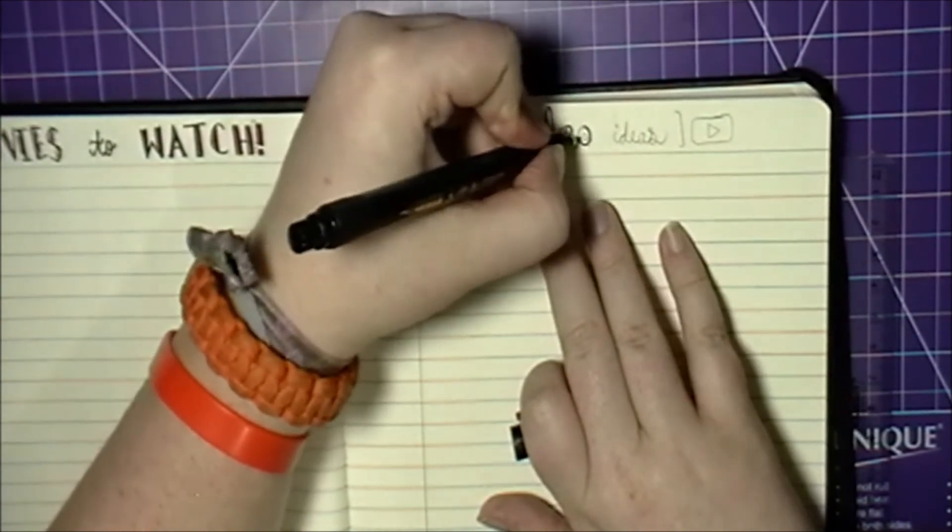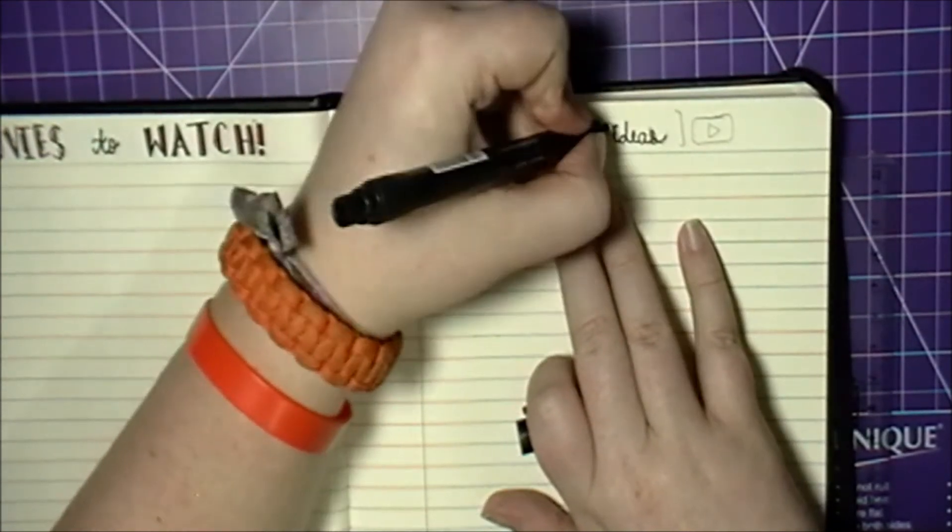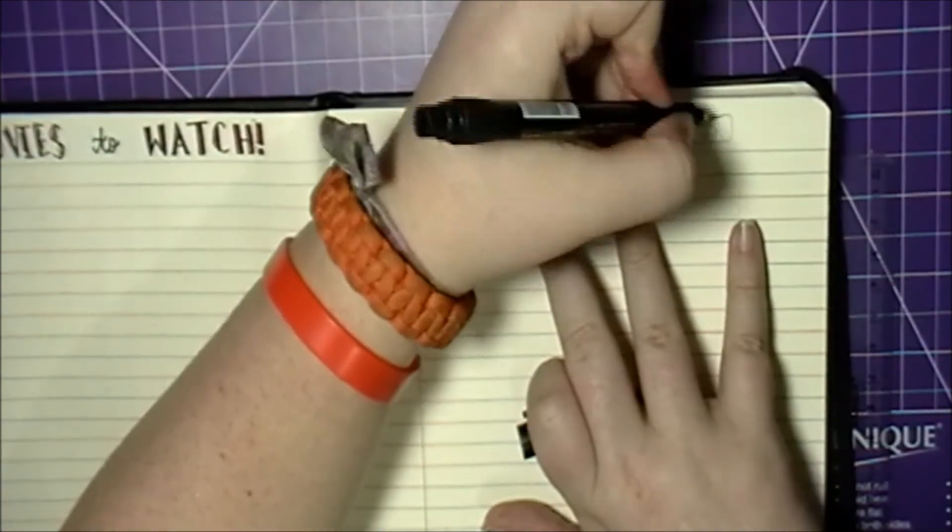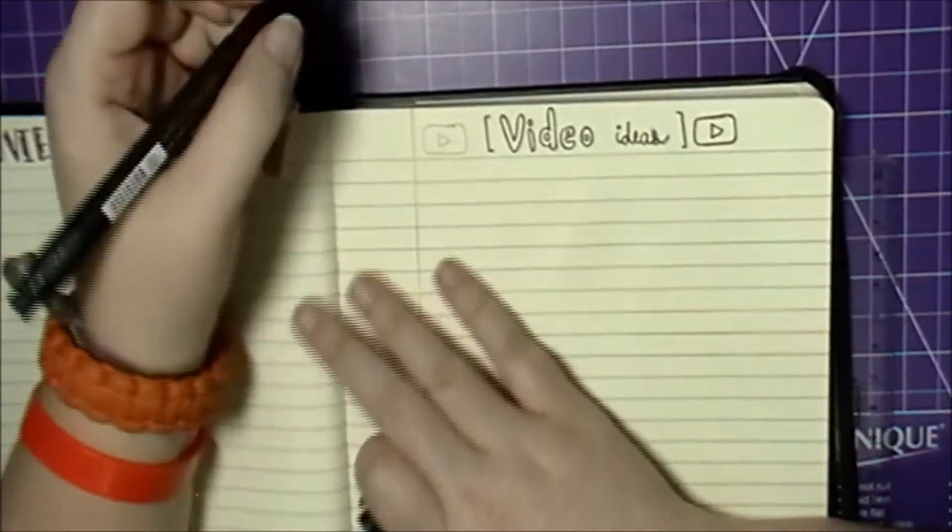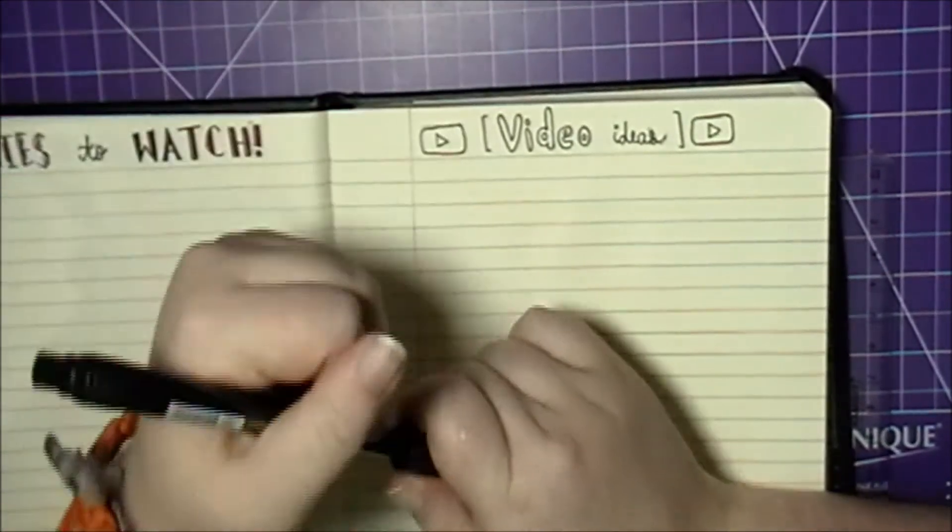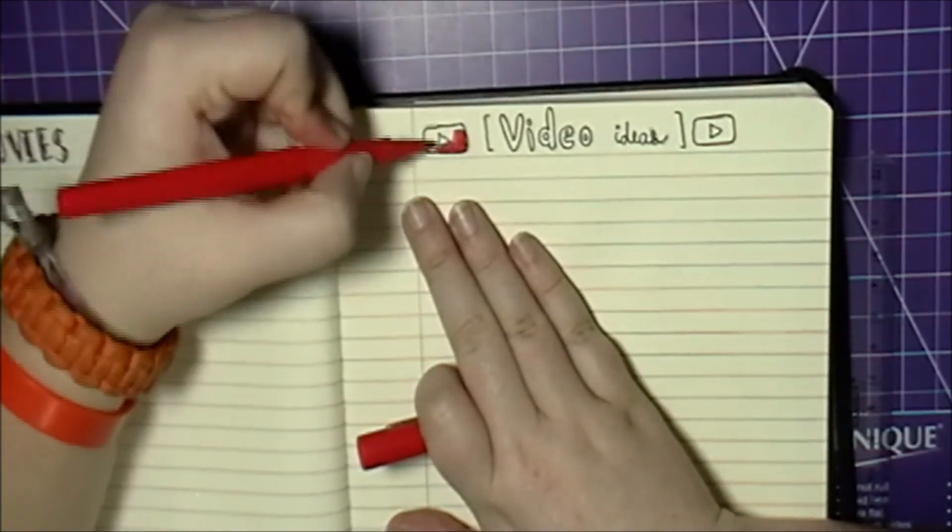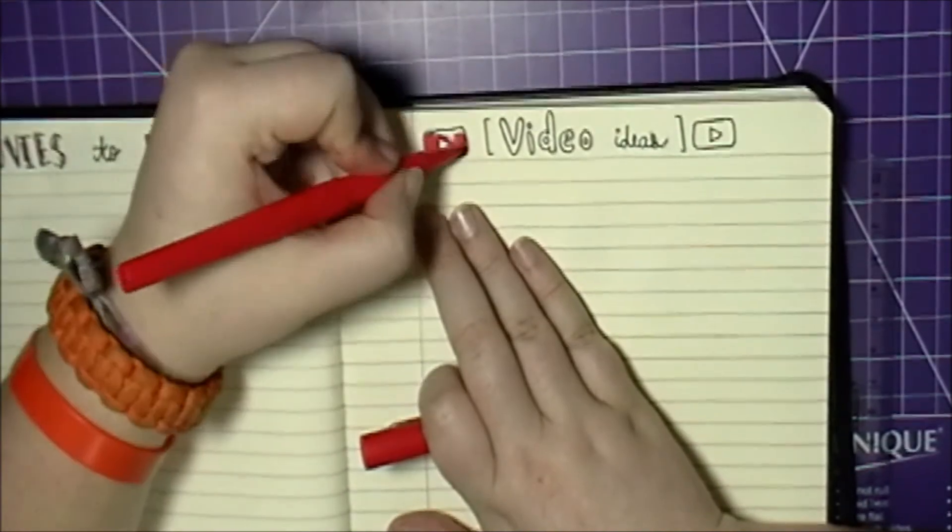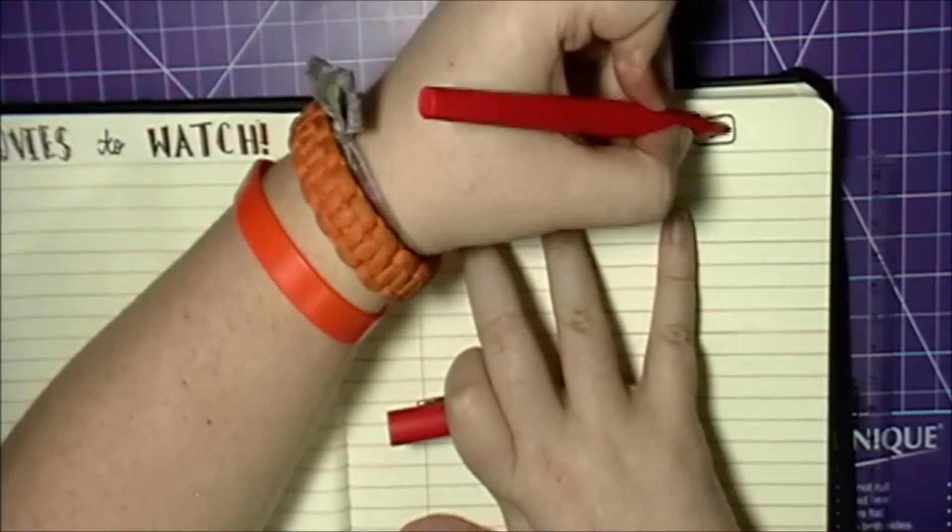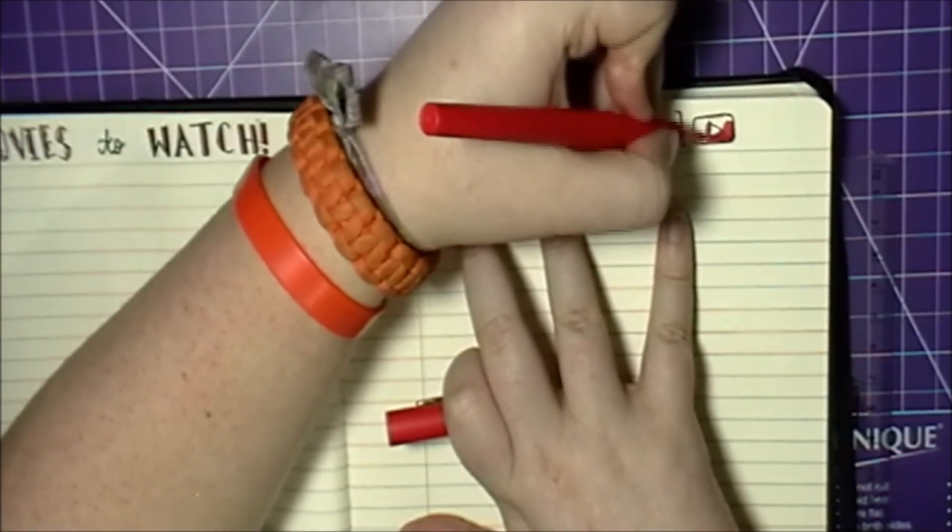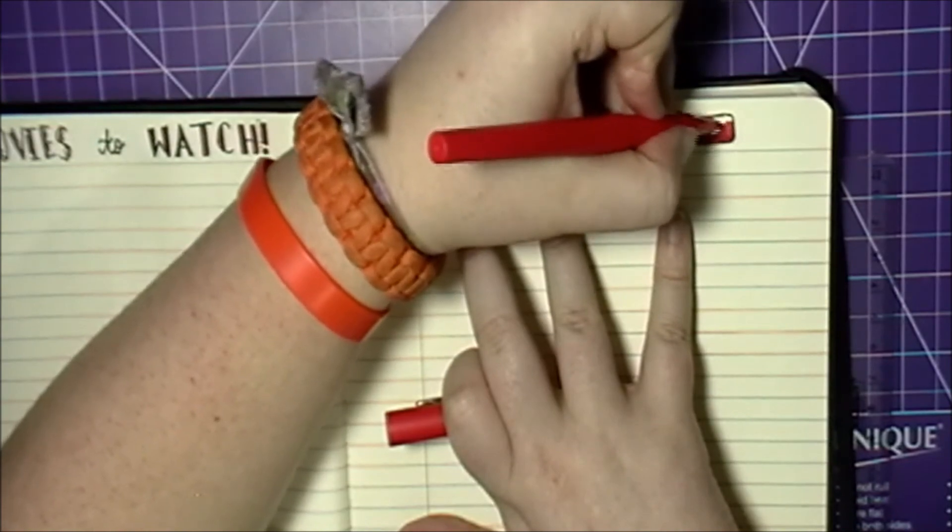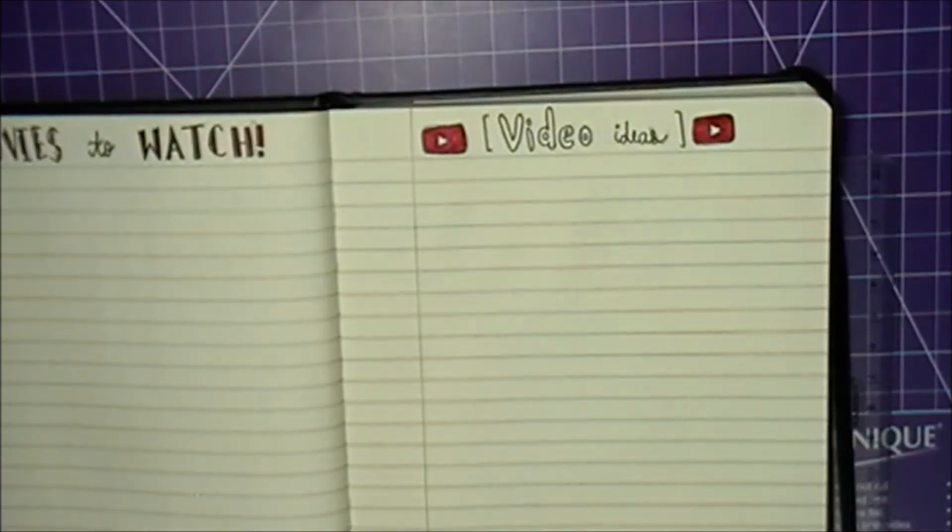And I believe this is the last spread before I get into my April month, which that would be a separate video altogether. And this is just video ideas. Previously in my old bullet journal I used to do projects for this month, but I feel like that was a waste of a page and I wasn't really using it up, so I figured just having a video ideas page in general would be good enough.